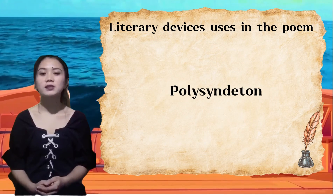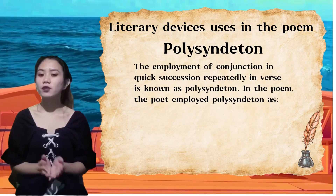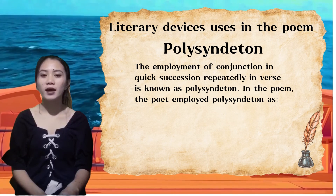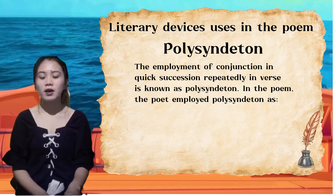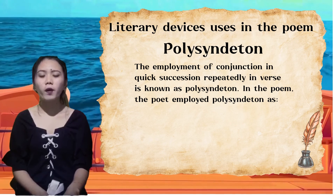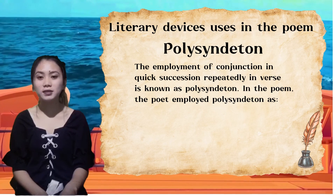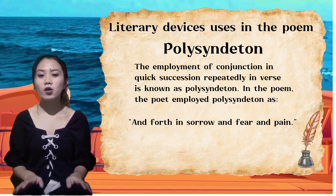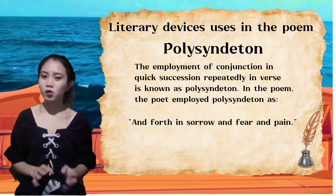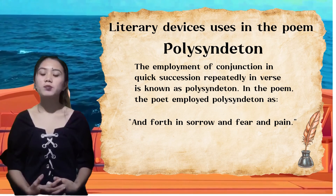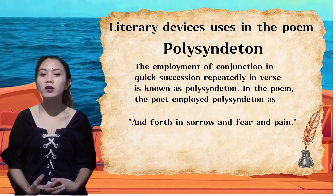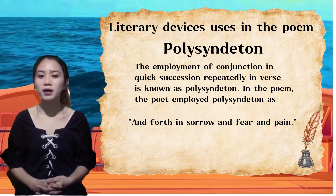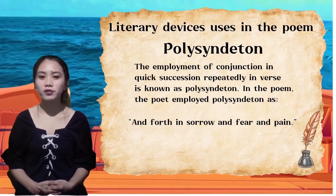Next is Polysyndeton — the repeated employment of conjunctions in quick succession. In the poem, the poet employs polysyndeton: 'and forth in sorrow and fear and pain.' The speaker describes the experiences of the seafarer accompanied by his suffering, establishing the melancholic tone of the poem.